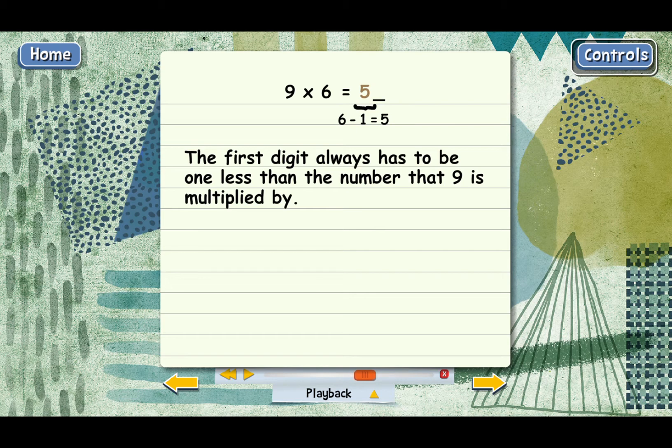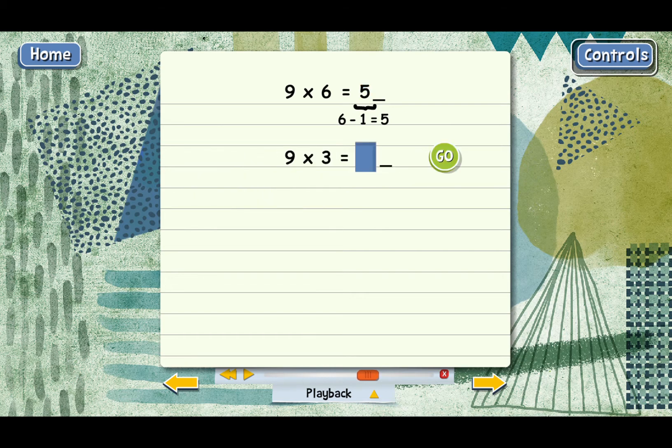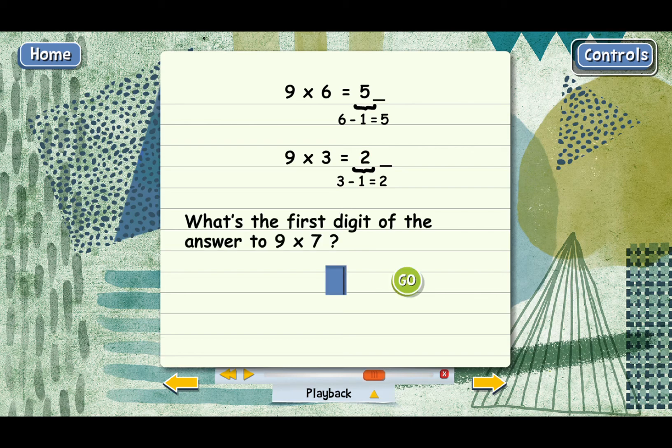Just to check, why don't you tell me what the first digit of the answer has to be for 9 times 3? That's right! The first digit is 2 because 3 minus 1 equals 2. Here's another one. What's the first digit of the answer to 9 times 7? Perfect!